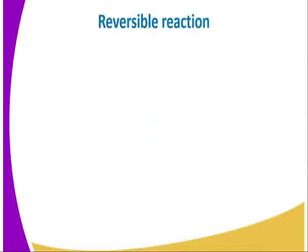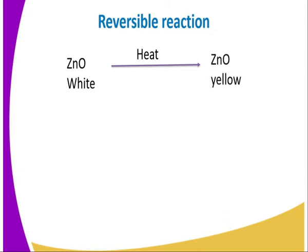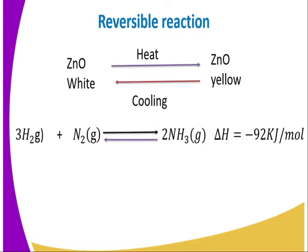Most of these reactions are reversible, so let's remind ourselves what a reversible reaction is. Consider zinc oxide, which is white in color — by applying heat and raising the temperature, it gives us zinc oxide which is yellow in color. This is a physical change because there is no change in chemical composition. On cooling, the same product goes back to zinc oxide, which is white. Another example is the manufacture of ammonia, which involves the reaction between hydrogen and nitrogen combined in a ratio of 1:3 to give ammonia gas. The process is exothermic.